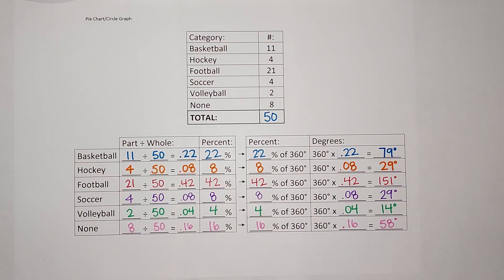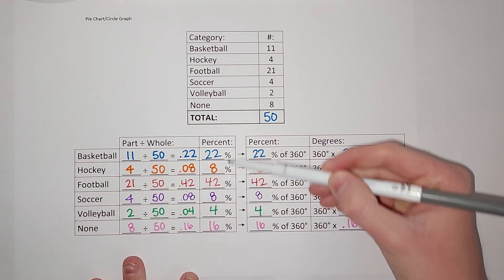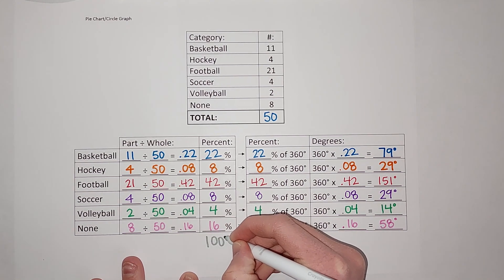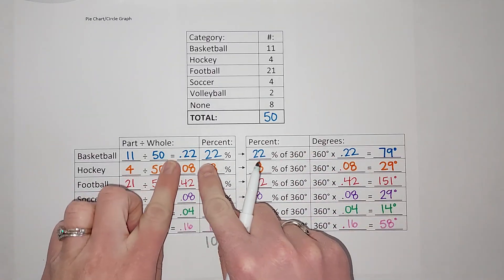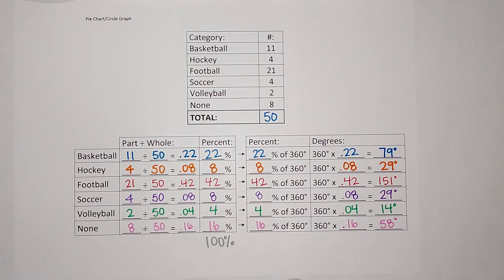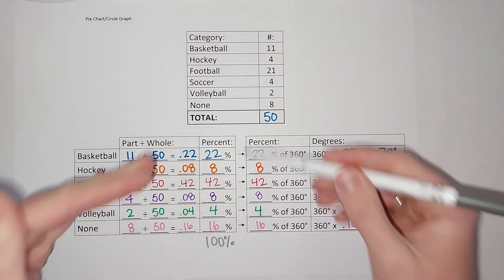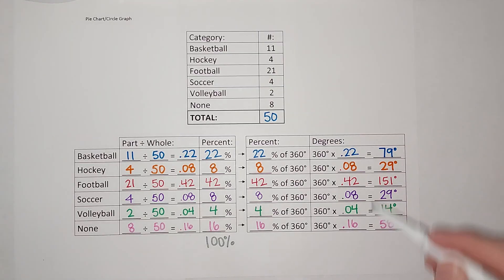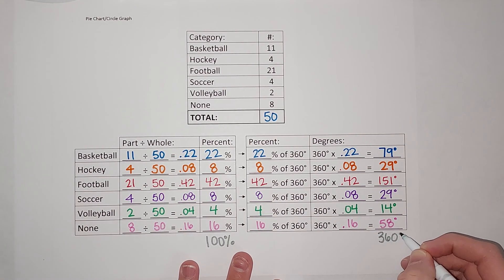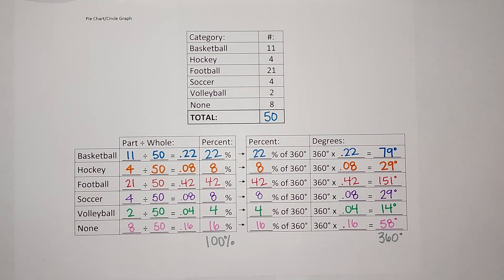A good habit to get into is to add these numbers and make sure they add to 100%. If you needed to round some numbers and they didn't come out pretty, it's possible you could get 99 or 101 due to rounding — but as long as you're about 100% you should be good. Same with the degrees: they should add up to 360. With rounding you could sometimes get 359 or 361 degrees, but as long as you're right there you should be good. It's just a good check.